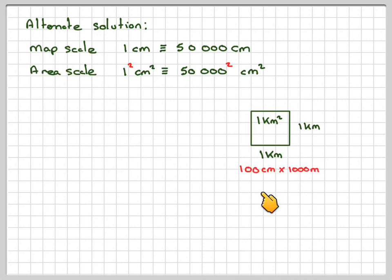1 kilometre is 100 centimetres times 1,000 metres. We're going to work out what 1 kilometre squared is in centimetres. And that's the same here, 100 times 1,000. That's 10 to the power of 5 centimetres, 10 to the power of 5. And therefore, the 1 kilometre squared will be 10 to the power of 5 times 10 to the power of 5, which is 10 to the power of 10 centimetres squared.